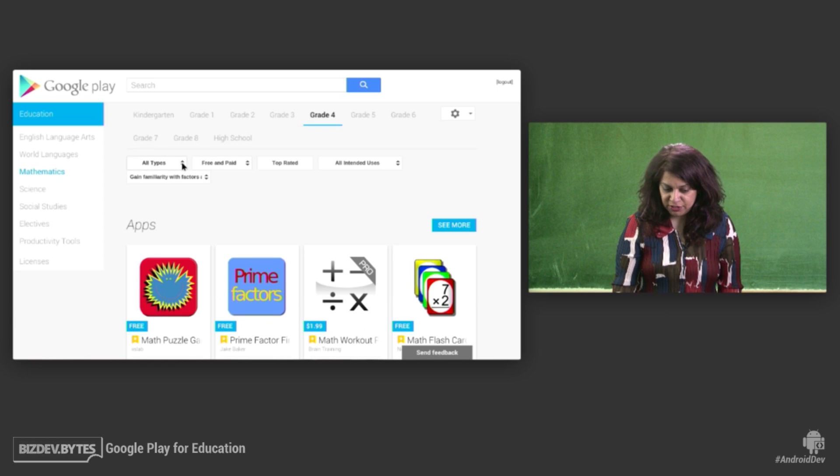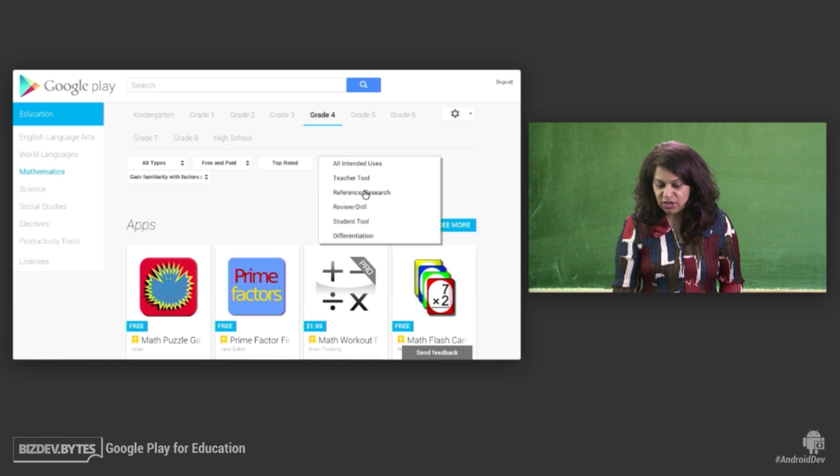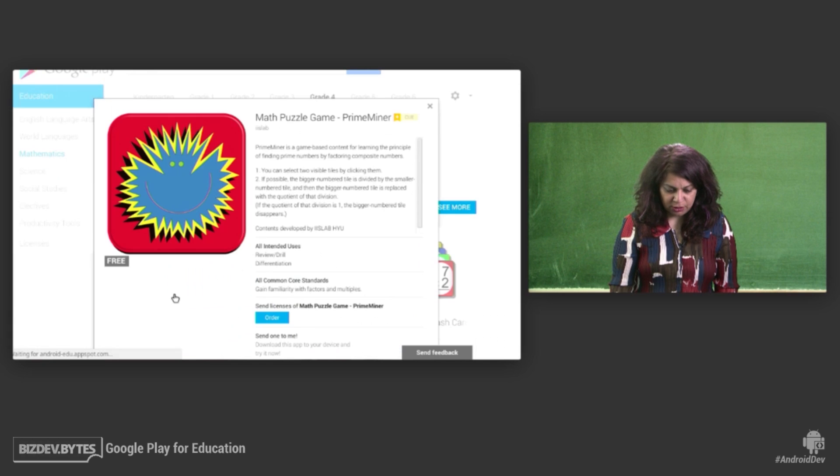I can further filter it by different types, so I can get other content like books and videos. I can search for free or paid. I can look for which ones are top rated. And then I can also look at the intended uses. So if I want to instruct today, if I want to as a review tool, student tool, et cetera. So this particular app looks interesting. Let's get more information on that.